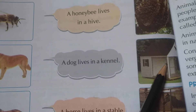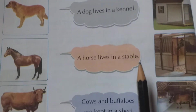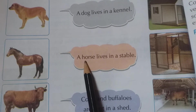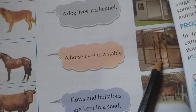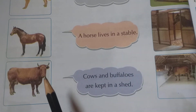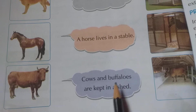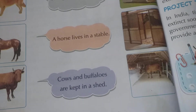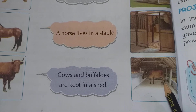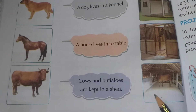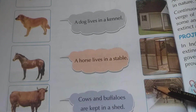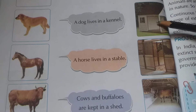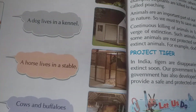A dog lives in a kennel. You can see this is the kennel where the dog lives. Next picture — a horse lives in a stable. Then cows and buffalos are kept in a shed. You can see this picture — this is a shed for cows and buffalos.